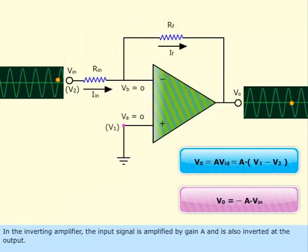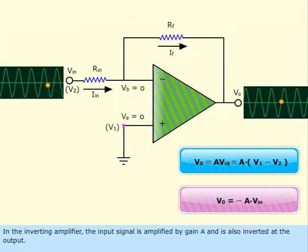In the inverting amplifier, the input signal is amplified by gain A and is also inverted at the output.